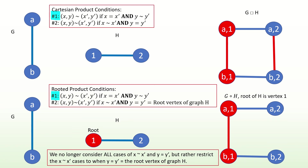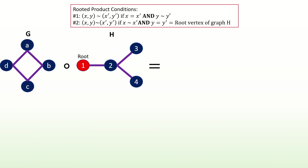Now let's take a look at some examples. What is the rooted product of graphs g and h, with g being the first input graph, h being the second, and with the root of h being vertex 1?